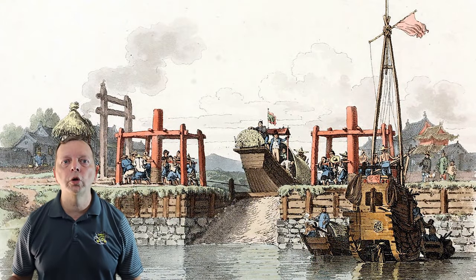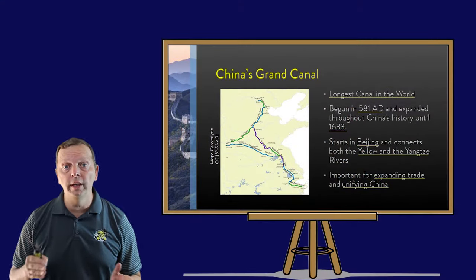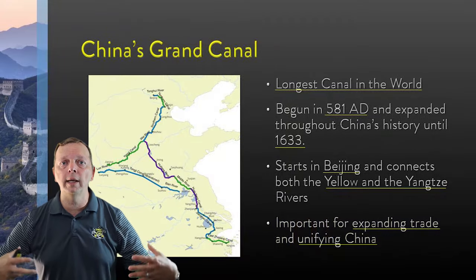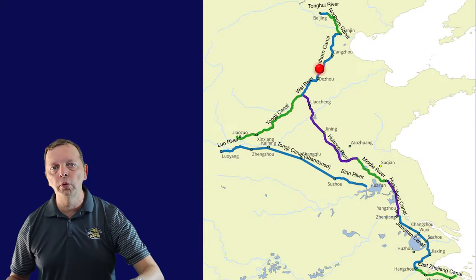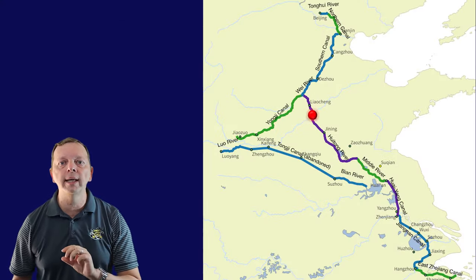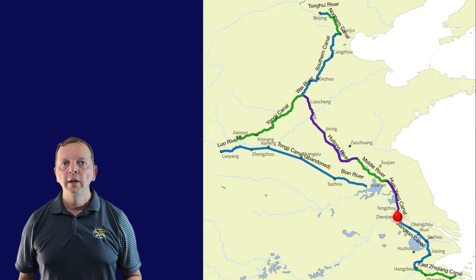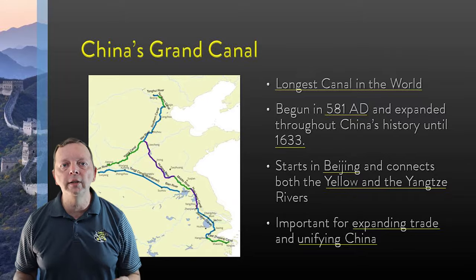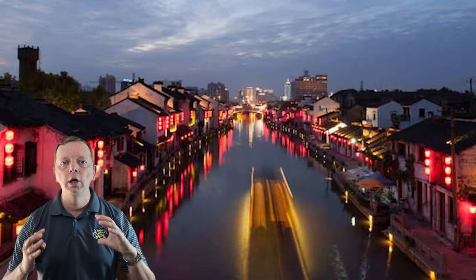This is hardly the first time the Chinese had altered water transportation in the region. Around 581 AD, the Sui Dynasty began connecting canals built over the previous 1,000 years, creating what would be called the Grand Canal. Successive dynasties expanded it until 1633, ultimately connecting Beijing with both the Yellow and the Yangtze Rivers, facilitating trade and unifying China.